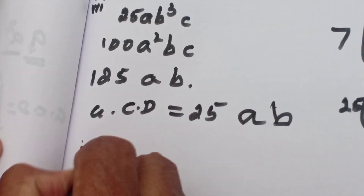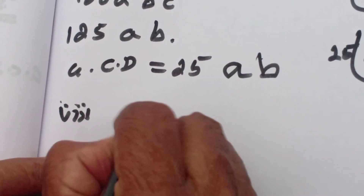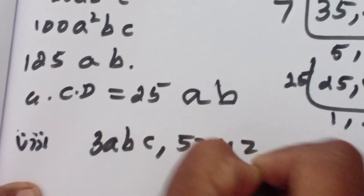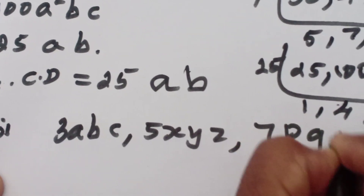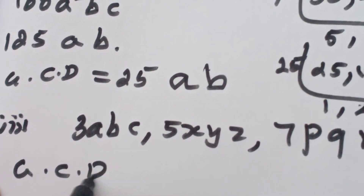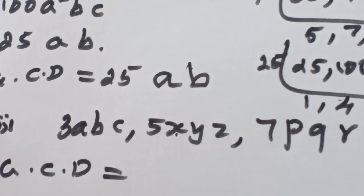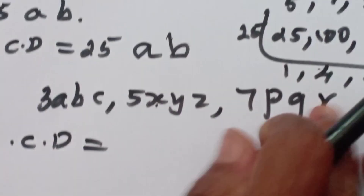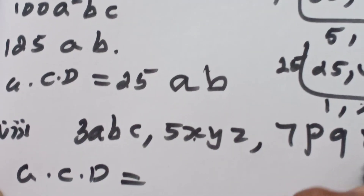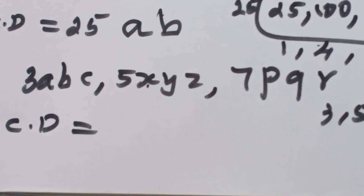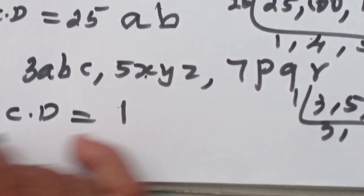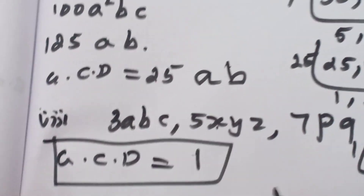Eighth: 3 a b c, 5 x y z, 7 p q r. By seeing the problem itself you can tell. The bases are different: a b c, x y z, p q r — all different. No common base here. For the numbers 3, 5, 7 — what is the common? 1. So which is the GCD? 1. 1 is the GCD.